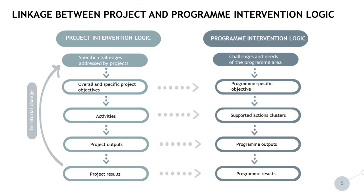On this visualization you see on the left-hand side the project intervention logic and on the right-hand side the program intervention logic. There needs to be a very clear linkage and consistency between the two. For example, the overall and project specific objectives need to clearly contribute to the program specific objective. The project activities need to be consistent with the supported actions foreseen in the program document. The project outputs need to contribute to the program outputs, and the project results need to be consistent with and contribute to the program results.